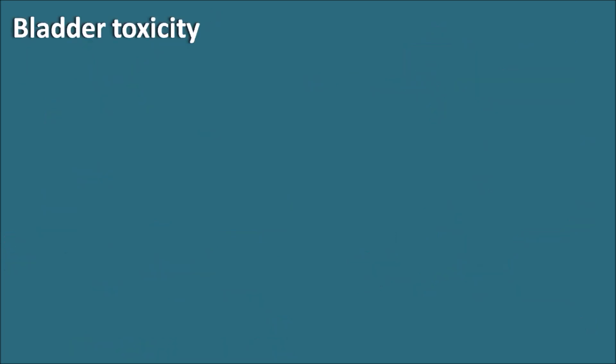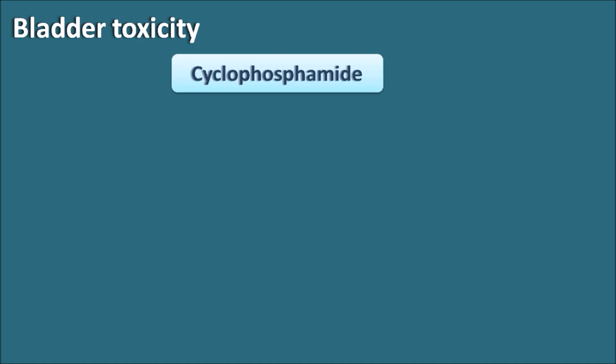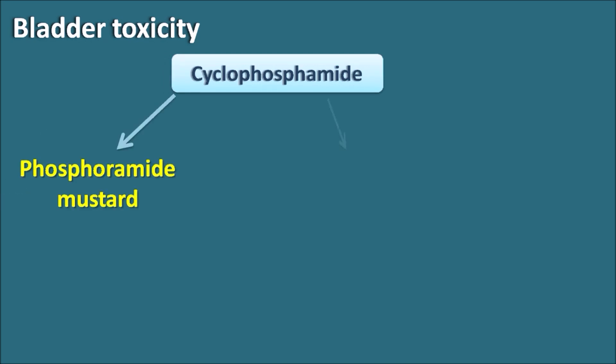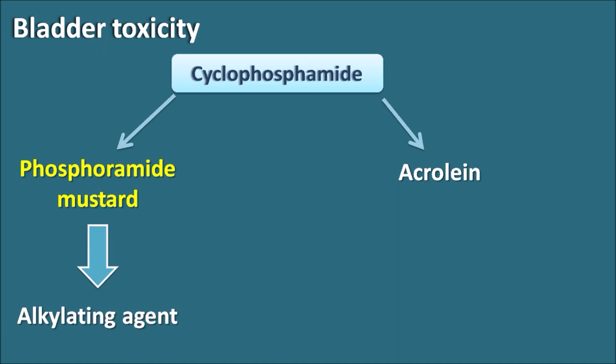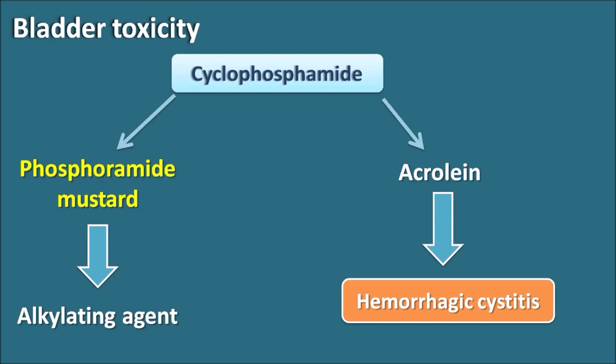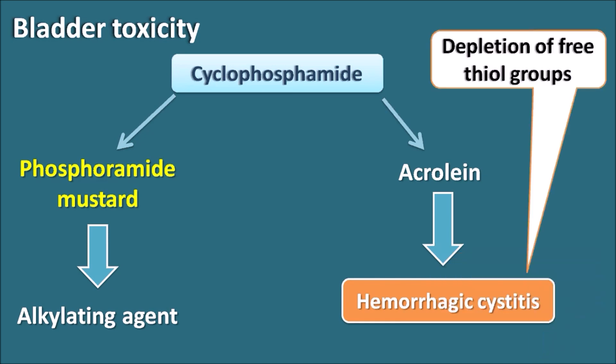Regarding bladder toxicity caused by cyclophosphamide: cyclophosphamide is split into phosphoramide mustard and acrolein. Phosphoramide mustard acts as the alkylating agent, whereas acrolein is a cytotoxic substance which produces hemorrhagic cystitis — a bladder toxicity. This hemorrhagic cystitis is caused by the depletion of free thiol groups within the bladder due to the action of acrolein.